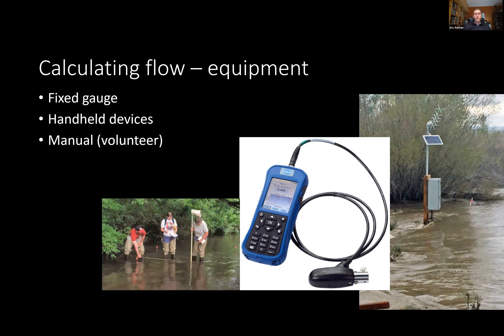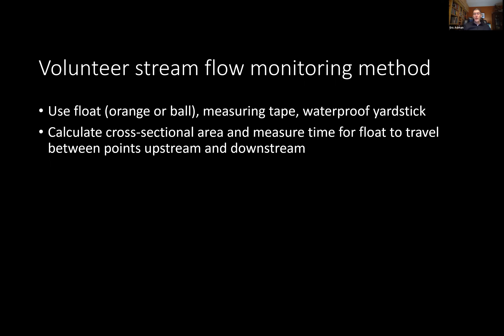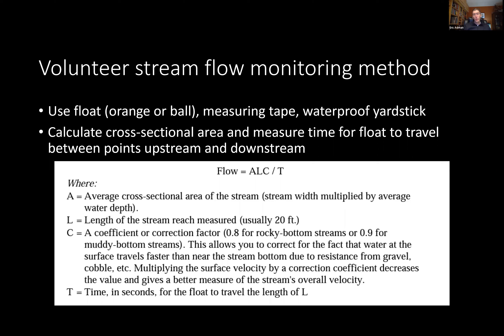The method we're going to use involves a float, a measuring tape, and a waterproof yardstick to measure depth. We'll calculate what we call the cross-sectional area at a couple of different points, measure the time it takes for the float to travel between an upstream and a downstream point, and use that in our equation — which will be on our worksheet.